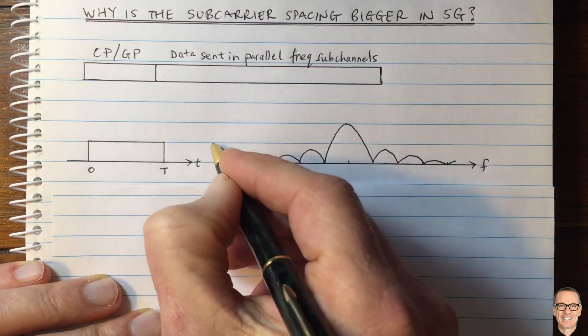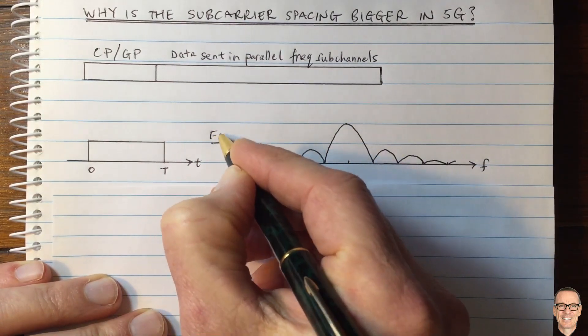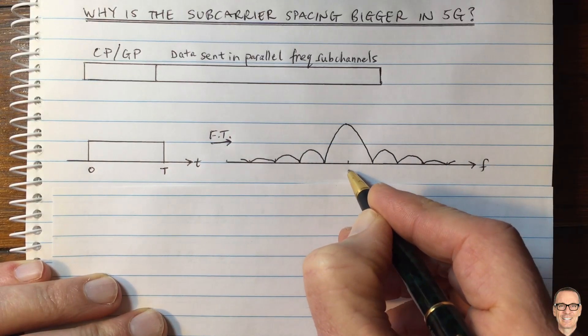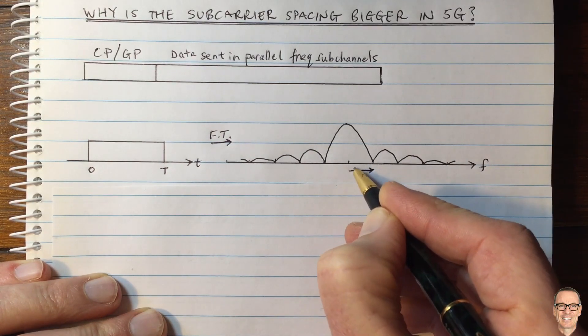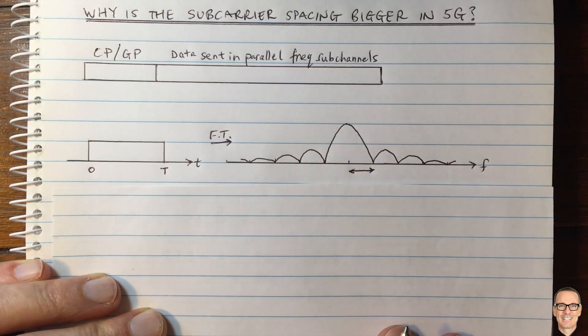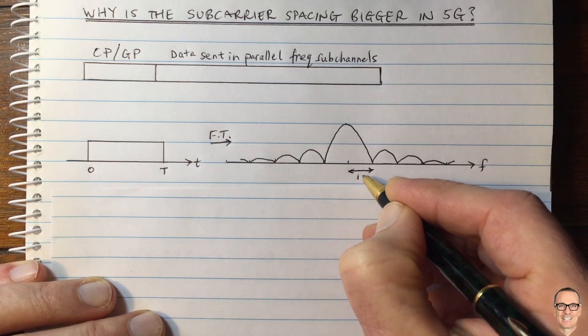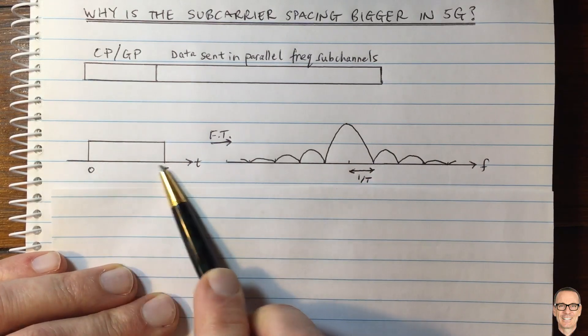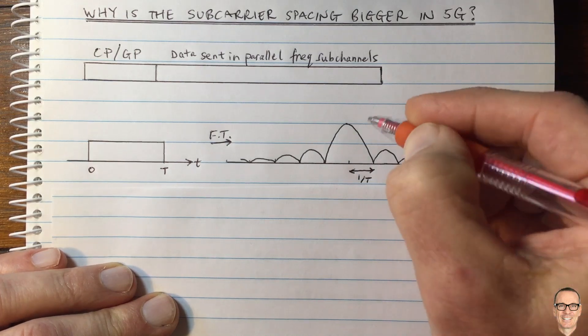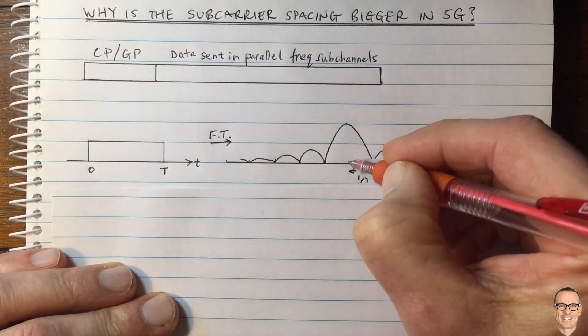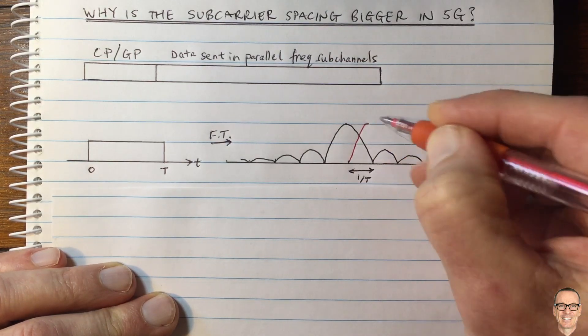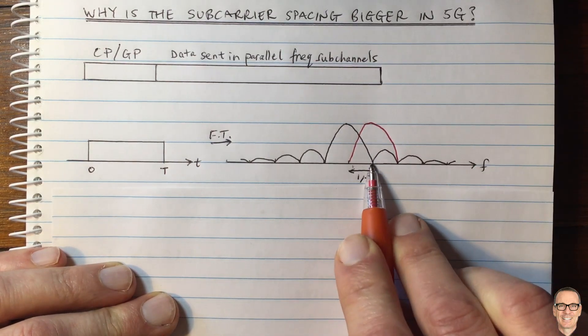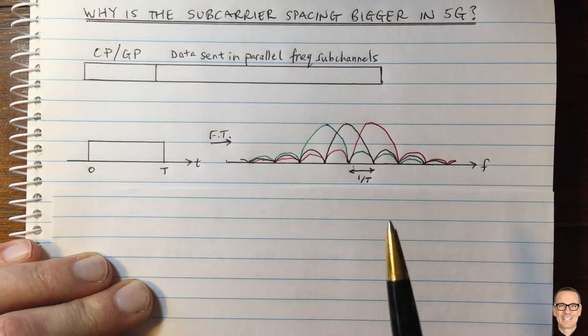And then in the frequency domain, we can look at the Fourier transform. And that is a sync function where this distance here, this frequency here is that length of frequency is one divided by T. So the carrier spacing is one divided by T, where T is this spacing. Why is it the carrier spacing? Because in OFDM, you can put orthogonal carriers, and so the orthogonal carrier can be spaced exactly at this separation.